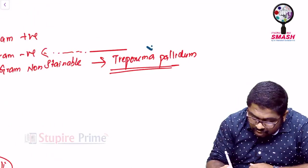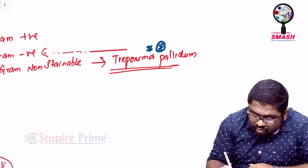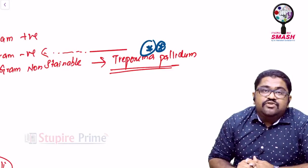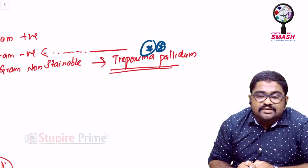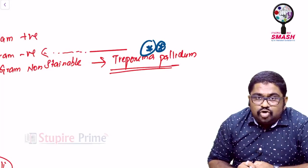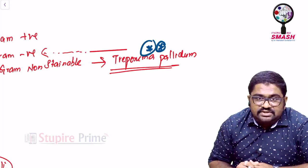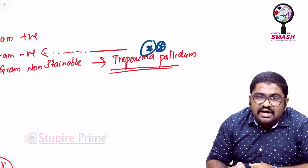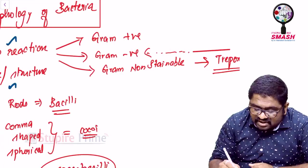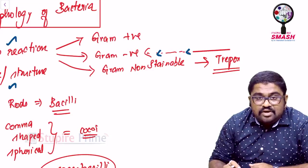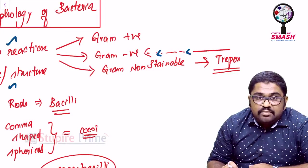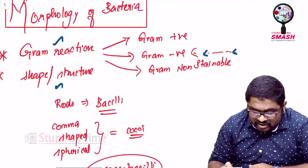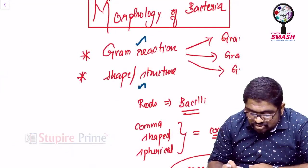The best example would be Treponema pallidum. But, for many practical purposes, if you perform gram-stain on the organism called as Treponema pallidum, though it is not accepting any of the gram-stains, by merely exposing it to the red-colored dye, it may appear pink at the end of it, which can make it believe as if it is a gram-negative organism. So, for many authors, this Treponema pallidum comes under gram-negative group of organisms. The next is about the shape or structure.